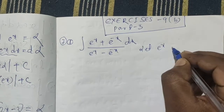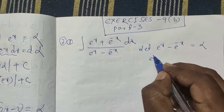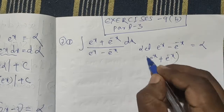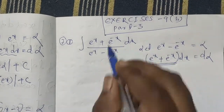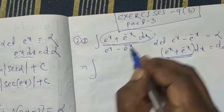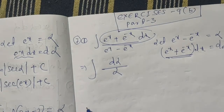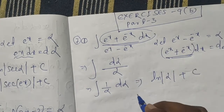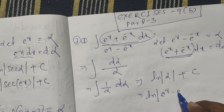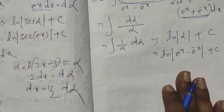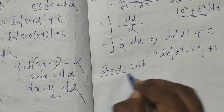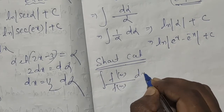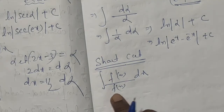Let e to the power x minus e to the power minus x equal to alpha. Then differentiating, e to the power x plus e to the power minus x dx equals d alpha. The shortcut formula is: the integration of f dash x by f of x dx — when the function is of the form p by q and the derivative of the denominator is on top — the answer is ln denominator plus c.